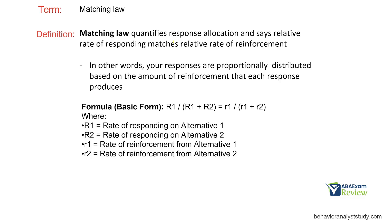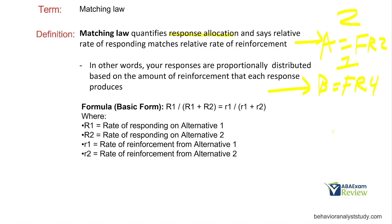Matching law attempts to quantify response allocation and says the relative rate of responding matches the relative rate of reinforcement. Your responses are distributed based on the amount of reinforcement that each response produces. So if response A gets reinforcement on an FR2 and response B gets reinforcement on an FR4, matching law says A is going to happen more than B. If I do A four times, I get two reinforcements. If I do B four times, I get one. That's matching law — that's response allocation.